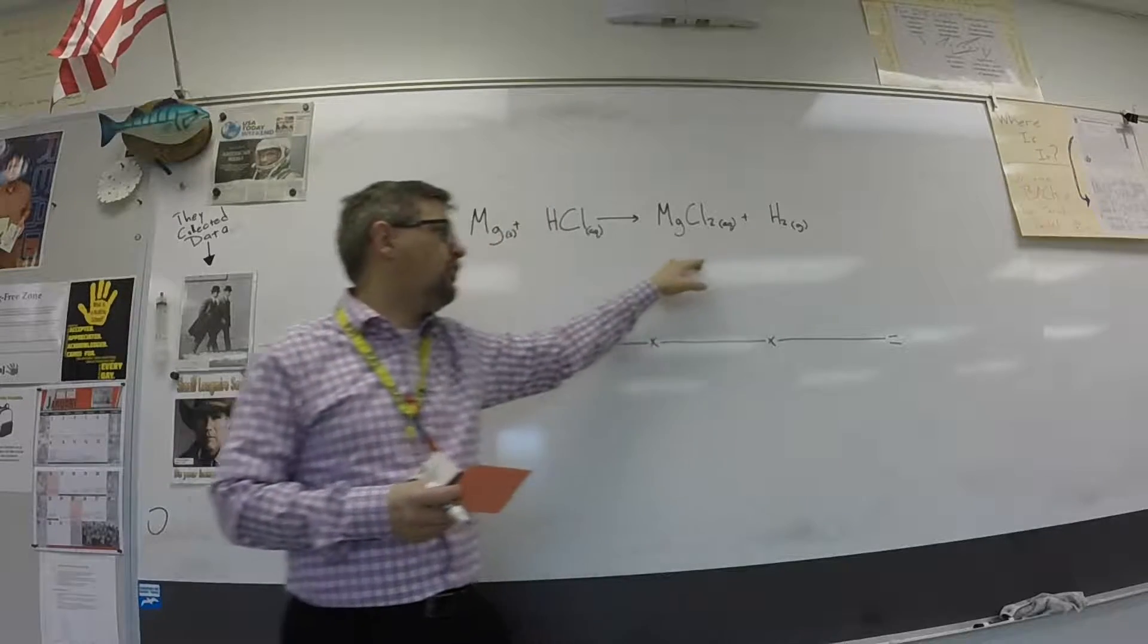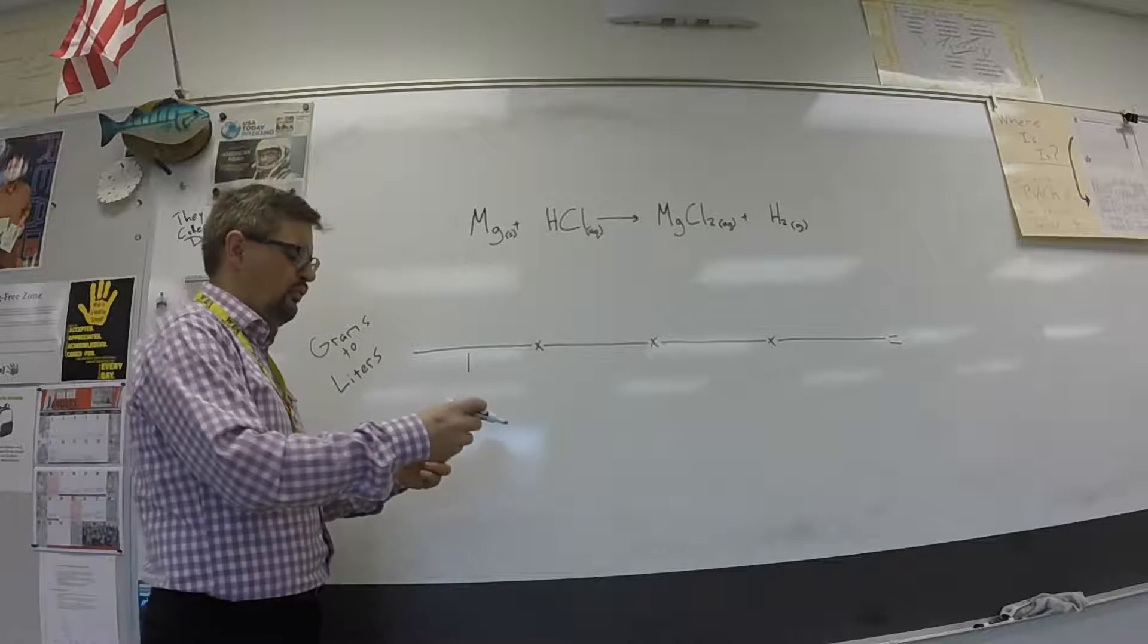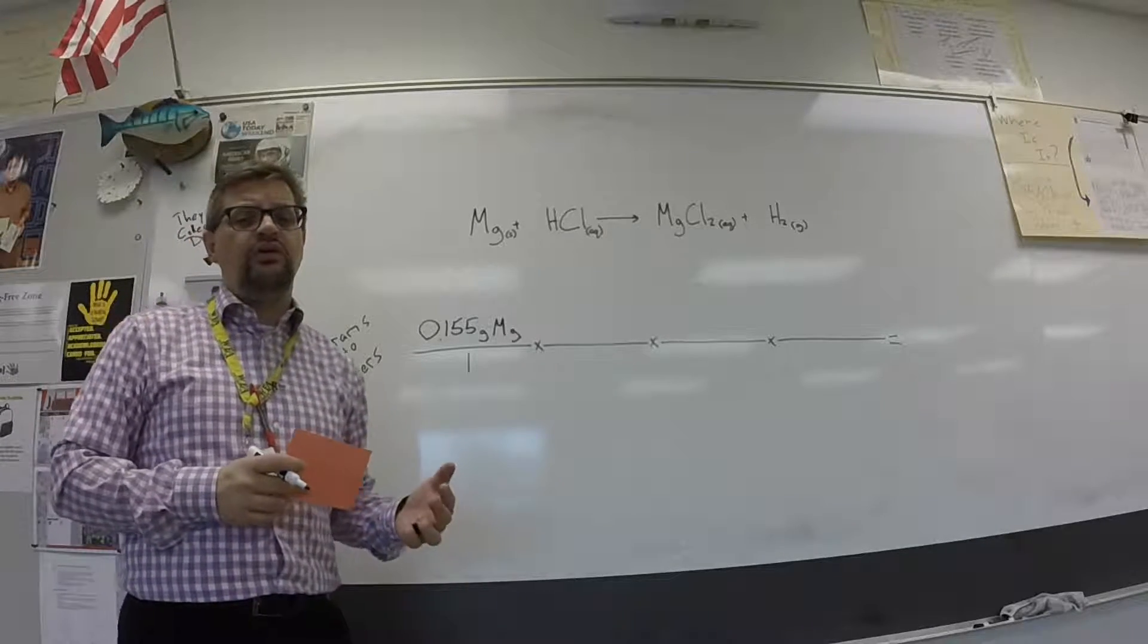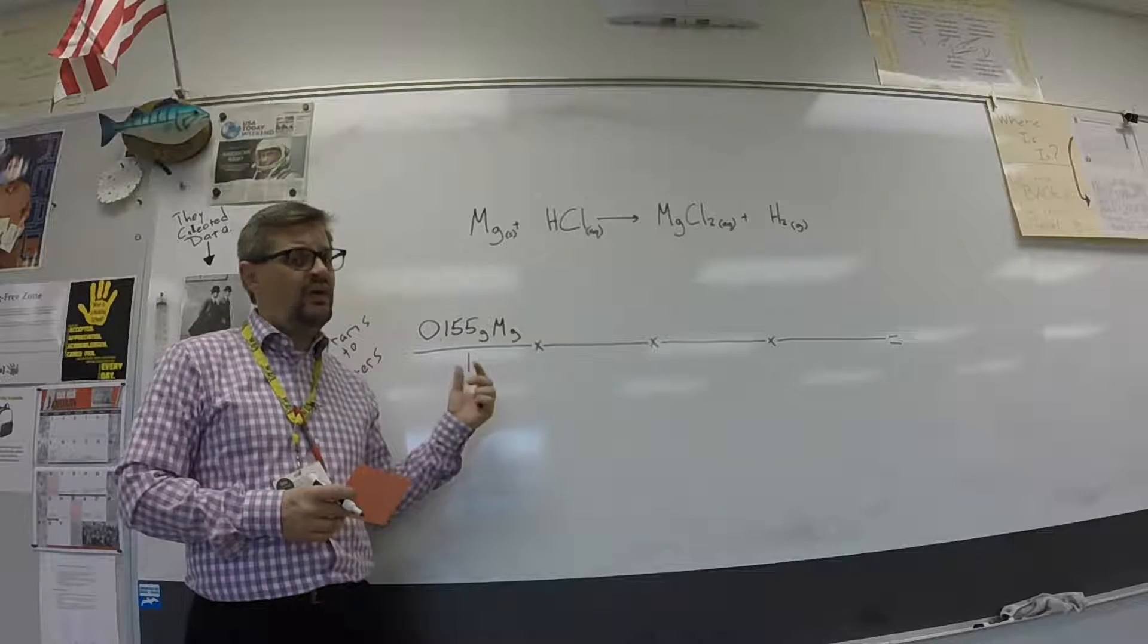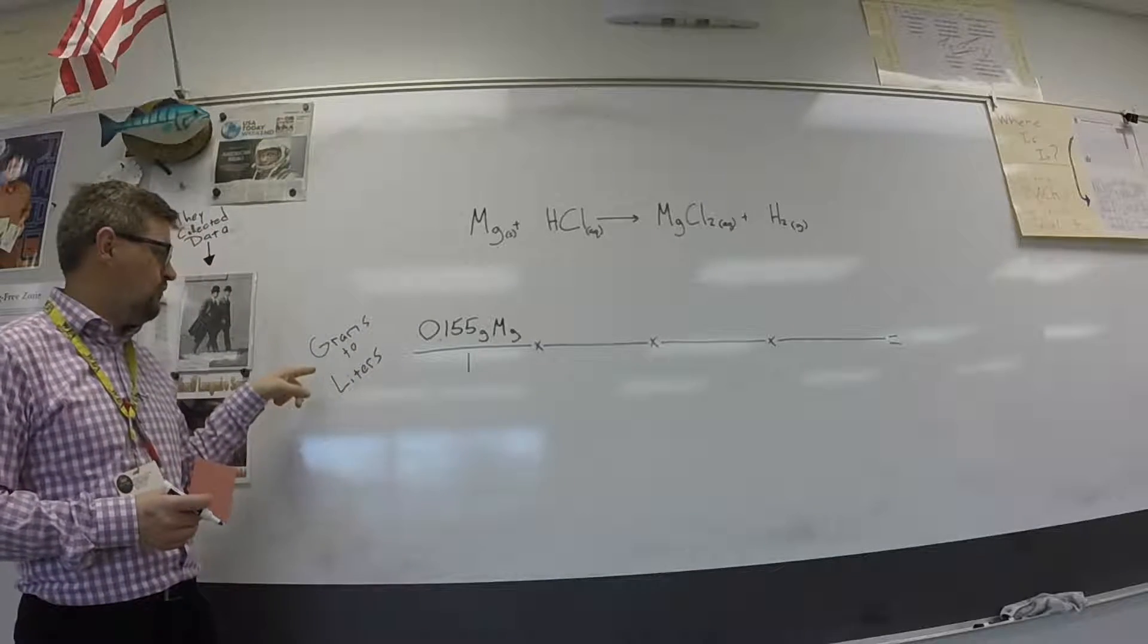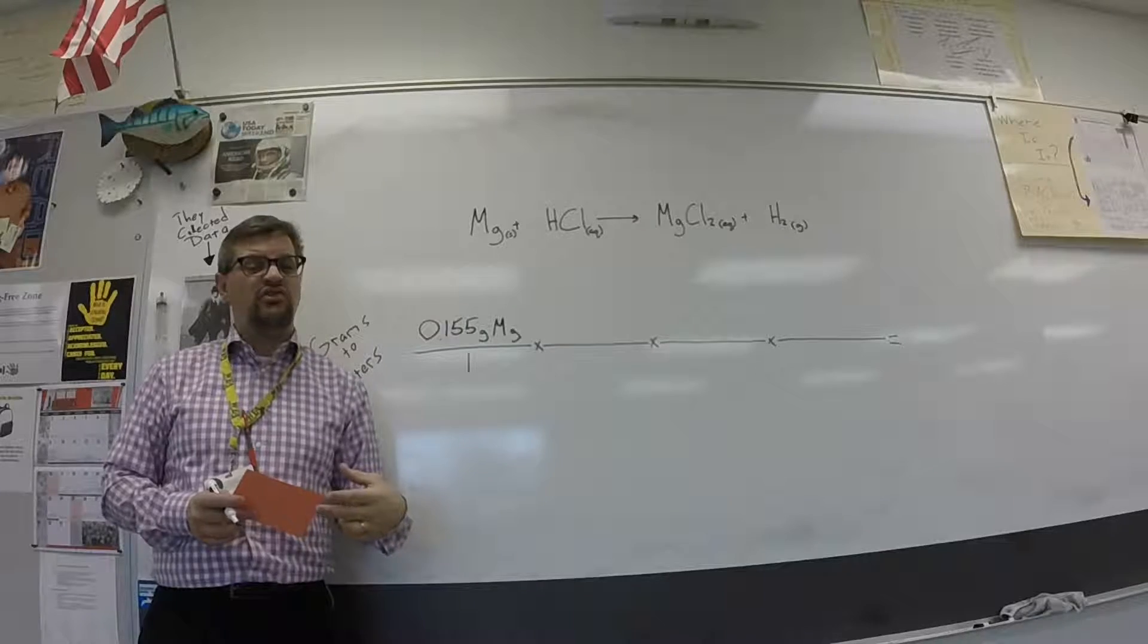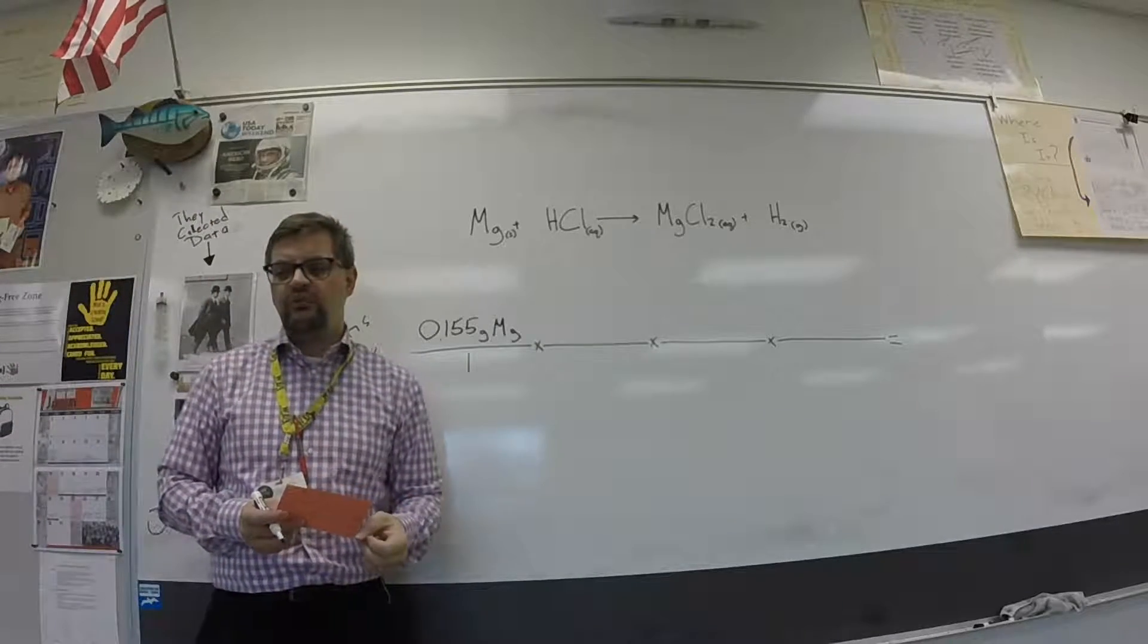Now what we want to see here is, based on our initial mass of magnesium metal, how much hydrogen should we have produced in the reaction. So if you remember, we started with 0.155 grams of magnesium metal. Now when you do stoichiometry problems, you're going to use the factor label method. So when you do the factor label method, the amount you're given to start with, you should put over one. Now with stoichiometry problems, here we're going from grams to liters, which will be similar to going from grams to grams.